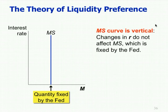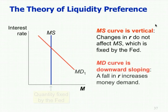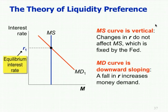In this diagram, unlike the quantity theory of money where the vertical axis was the value of money, here the vertical axis is the interest rate. The money supply curve is vertical — changes in the interest rate do not affect money supply because that is fixed by the Fed. Now put supply and demand together: the equilibrium interest rate adjusts in the short run to equate the supply and demand for money when prices can't adjust.